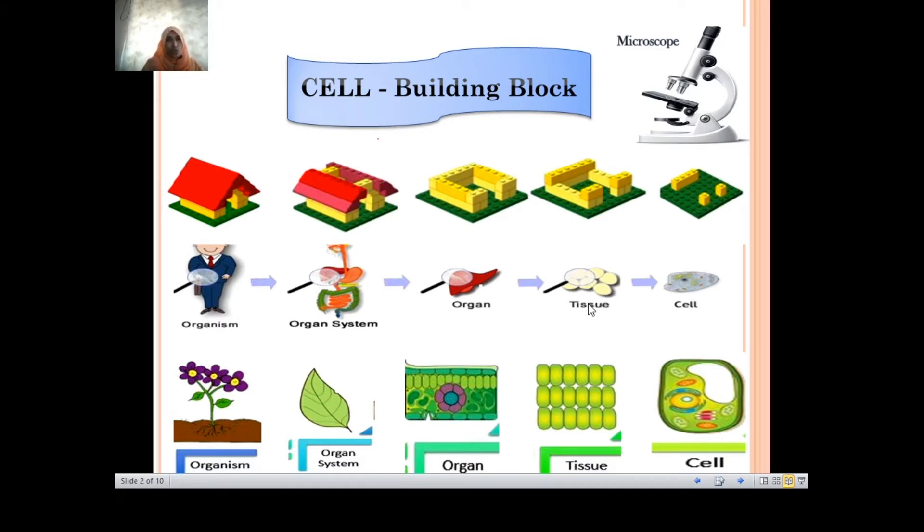Now this group of tissues with a similar structure and function together, they form what we call as organ. Many different types of organs in a body, they together form an organ system and that makes up the body of a plant or an animal. Similarly, in terms of plant cell, each cell which is of similar shape and size, they get together to form tissues. This in turn will give you an organ. Organ later develops into an organ system which forms a body of a plant.